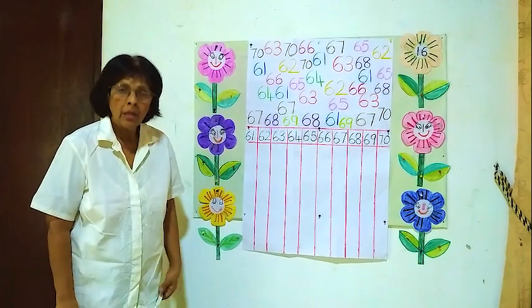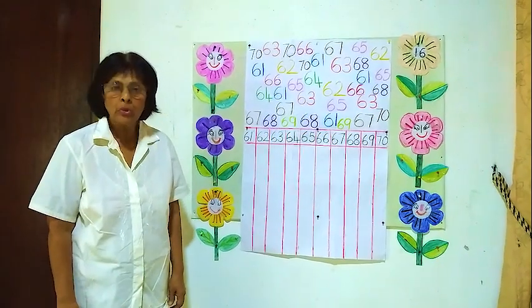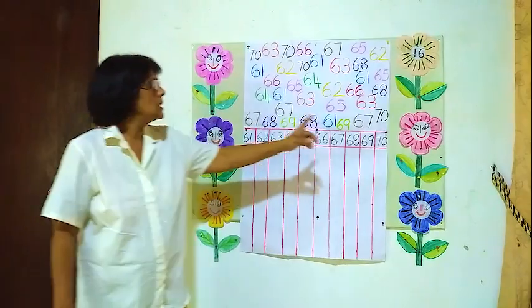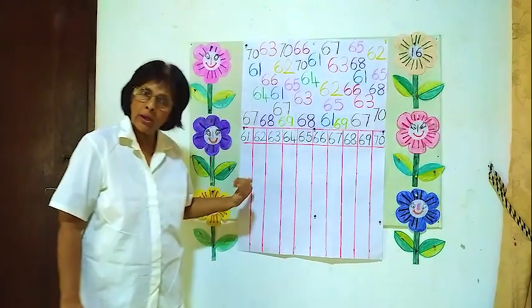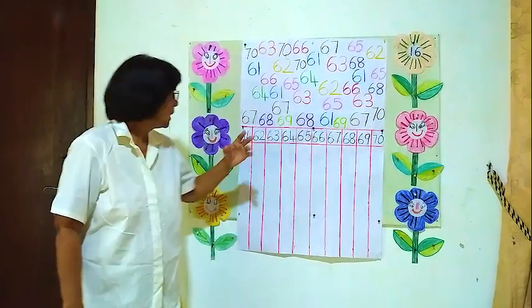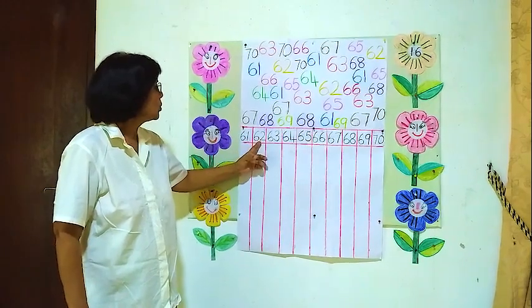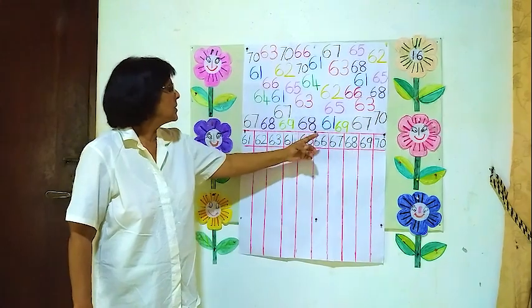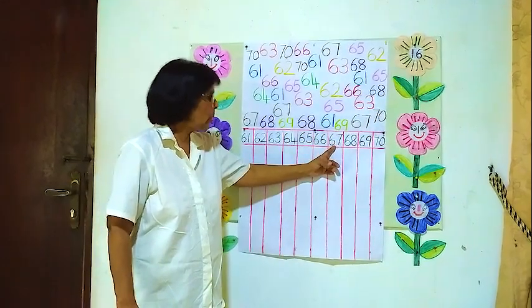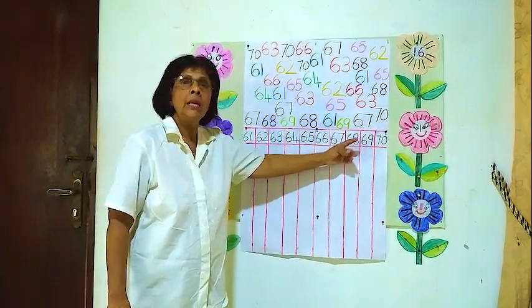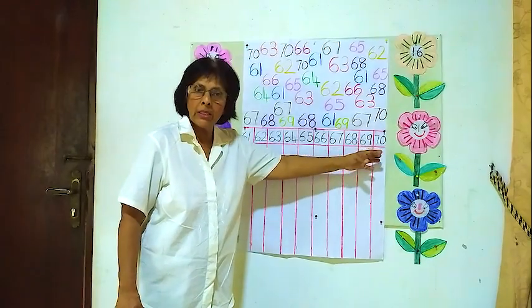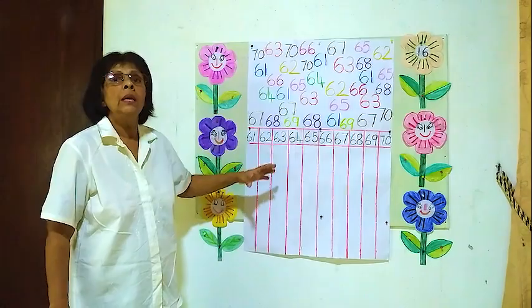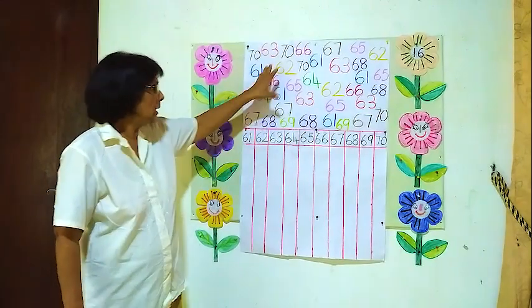Hello children. Today we are going to sort out numbers from 61 to 70. Here: 61, 62, 63, 64, 65, 66, 67, 68, 69, 70.